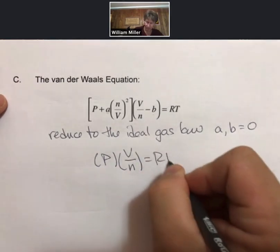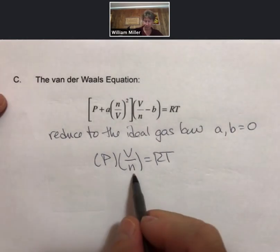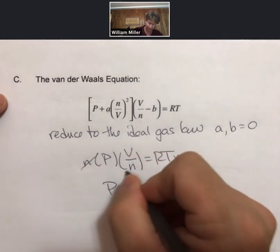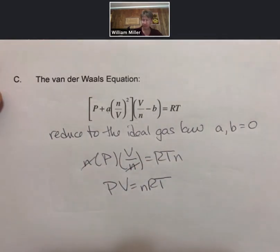And then the whole thing equals RT. Multiply both sides by N, and you get PV equals NRT. So A and B are going to be constants.